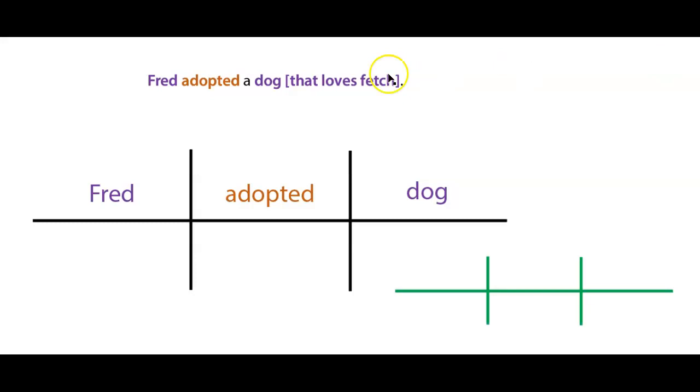All right, cool. Now we know we're going to have that loves fetch. That's going to be an adjective clause, right? Because it's telling us more information about the dog. And we got to figure out the verb inside of that adjective clause.